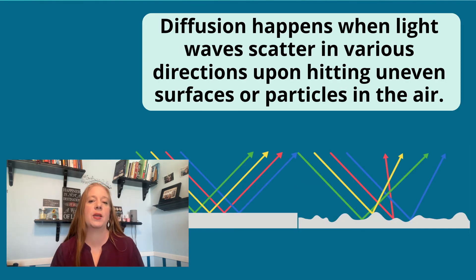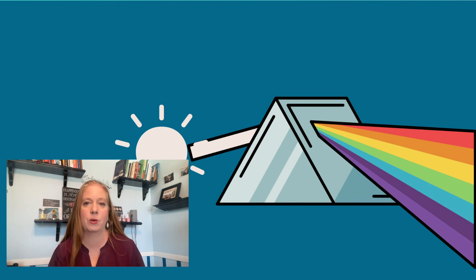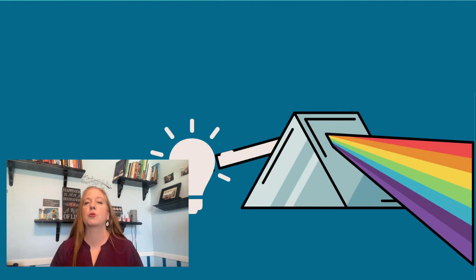Diffusion happens when light waves scatter in various directions upon hitting uneven surfaces or particles in the air. This diffusion of light is why we see rainbows. When the light hits the water droplets in the air, it gets reflected at different angles, causing the white light to separate into different colors.